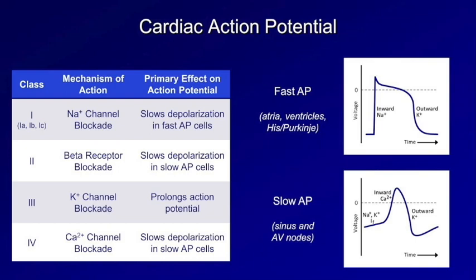Antiarrhythmic agents: Class 1 — sodium channel blockers. Class 1A: procainamide, quinidine, disopyramide — mechanism is to decrease conduction velocity and prolong repolarization. Class 1B: lidocaine and tocainide. Class 1C: flecainide, propafenone, and encainide.